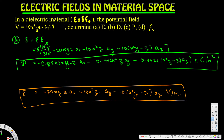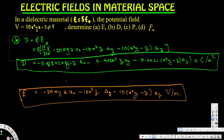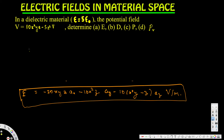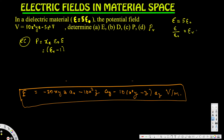The next question asks for P. P can be calculated using χe times epsilon naught times E, where χe equals epsilon_r minus 1. Now, epsilon equals 5 epsilon naught, so dividing both sides by epsilon naught gives epsilon_r equals 5. Therefore χe equals 5 minus 1 equals 4.